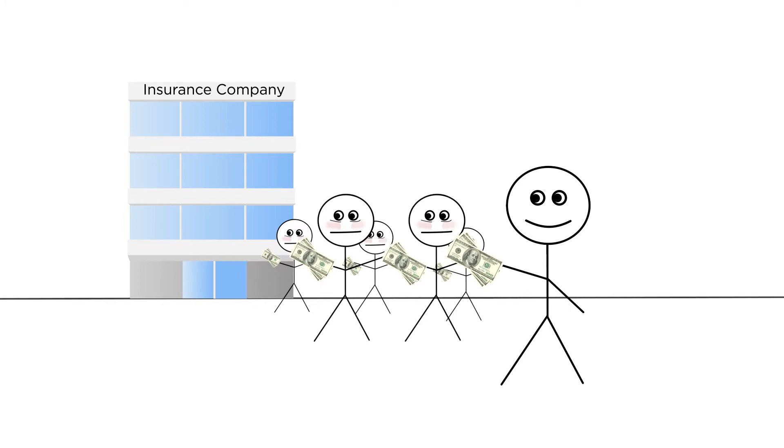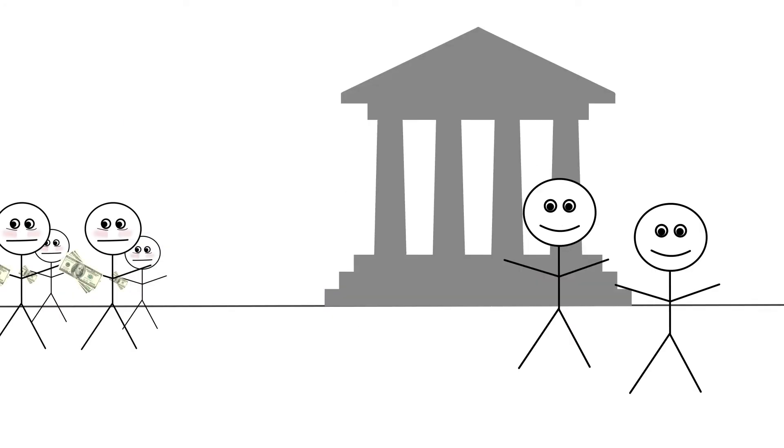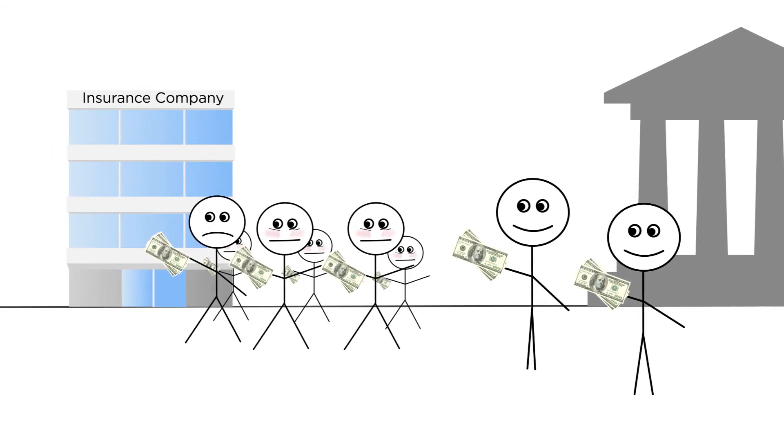So as with any positive externality, we can also address it through a corrective subsidy. If we give folks money to buy insurance, then we can get healthy people to participate, even if it isn't a good deal for them. In the US, we do this through a tax break for those who get health insurance at work.